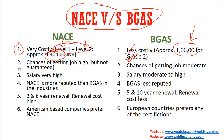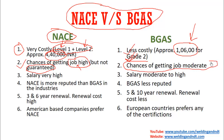Looking at chances of getting a job: with NACE Level 1 and Level 2, the chances of getting a job are very high. It is not guaranteed, but it is always expected that a NACE certificate holder will get a good job. Whereas with BGAS, the chance of getting a job is moderate to low. So on this point, NACE has the advantage.